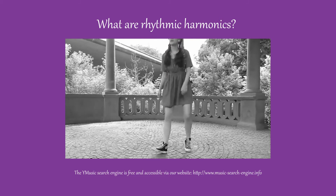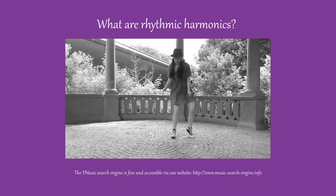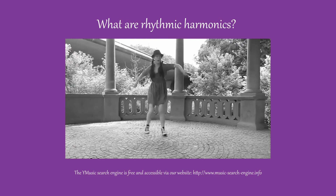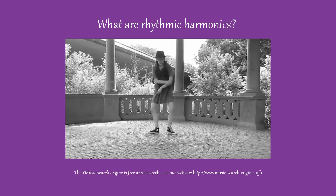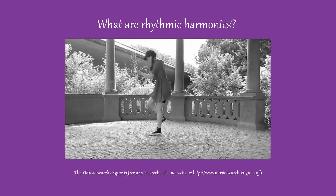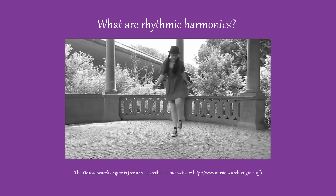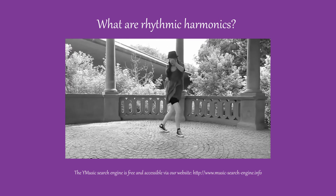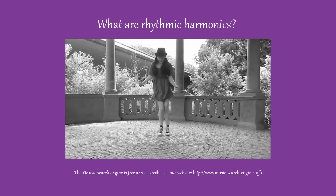A piece of music contains one or more rhythmic harmonics. They are multiples or divisions of the basic tempo. To establish proportions between these harmonics, we can use numbers. If one represents the basic tempo of a piece of music, one sixteenth represents a rhythmic harmonic sixteen times slower than the basic tempo. Conversely, sixteen represents a rhythmic harmonic going sixteen times faster than the basic tempo.